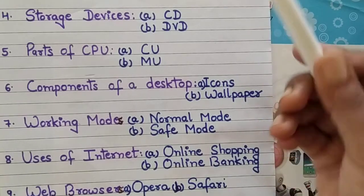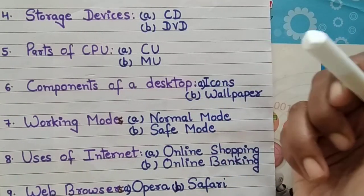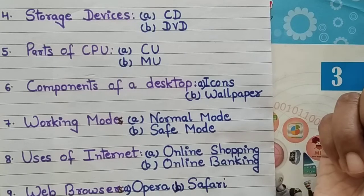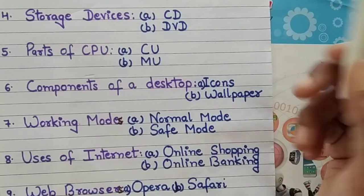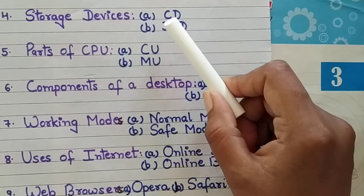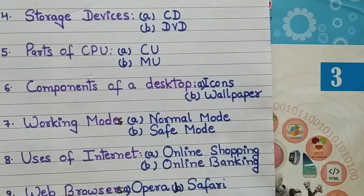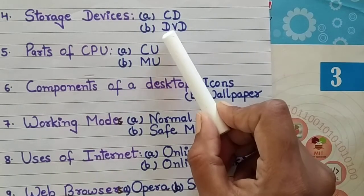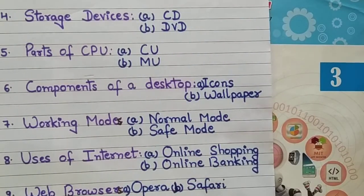You can write any storage devices like pen drive, hard disk — there are many. I have written only 2: CD, which is compact disc, and DVD, which is digital versatile disc.